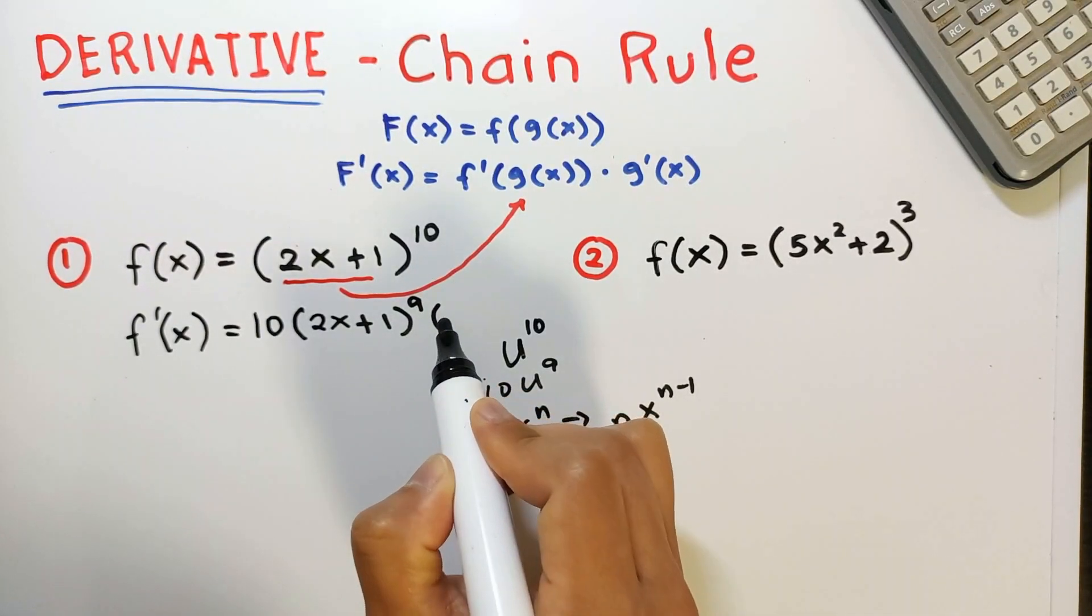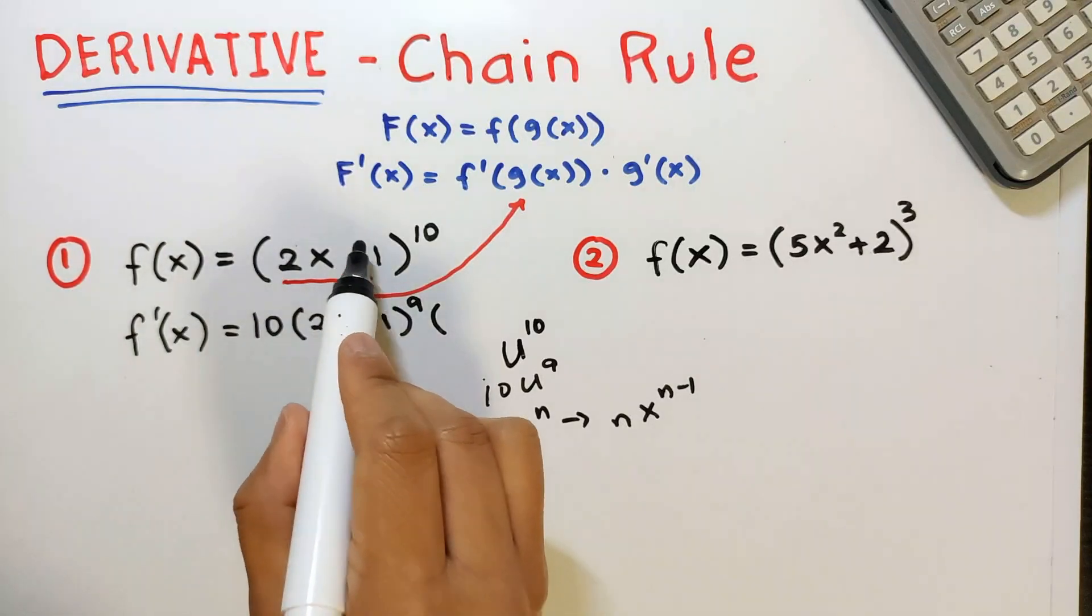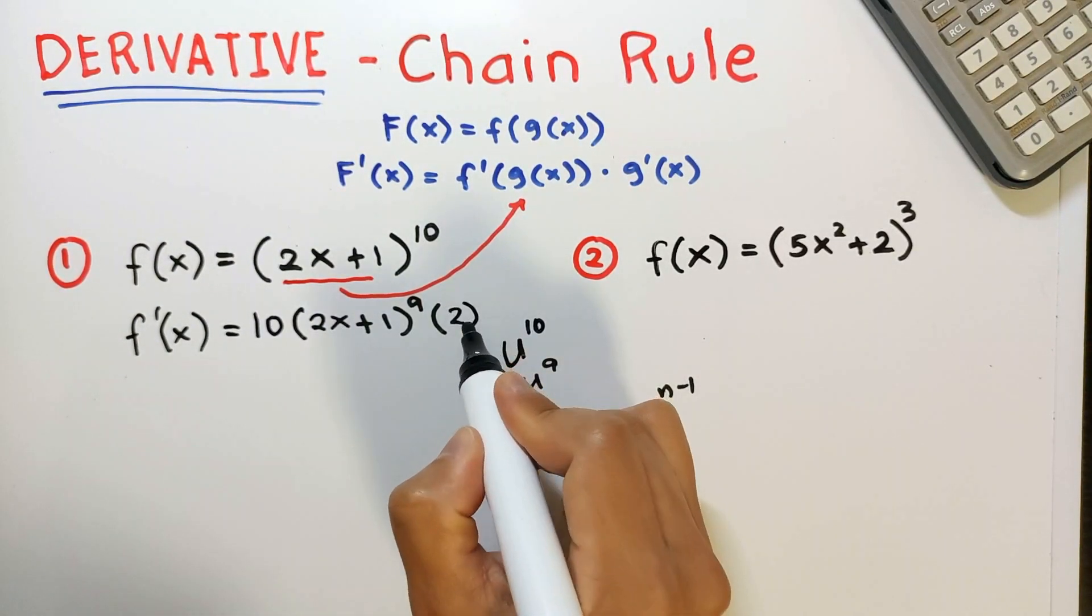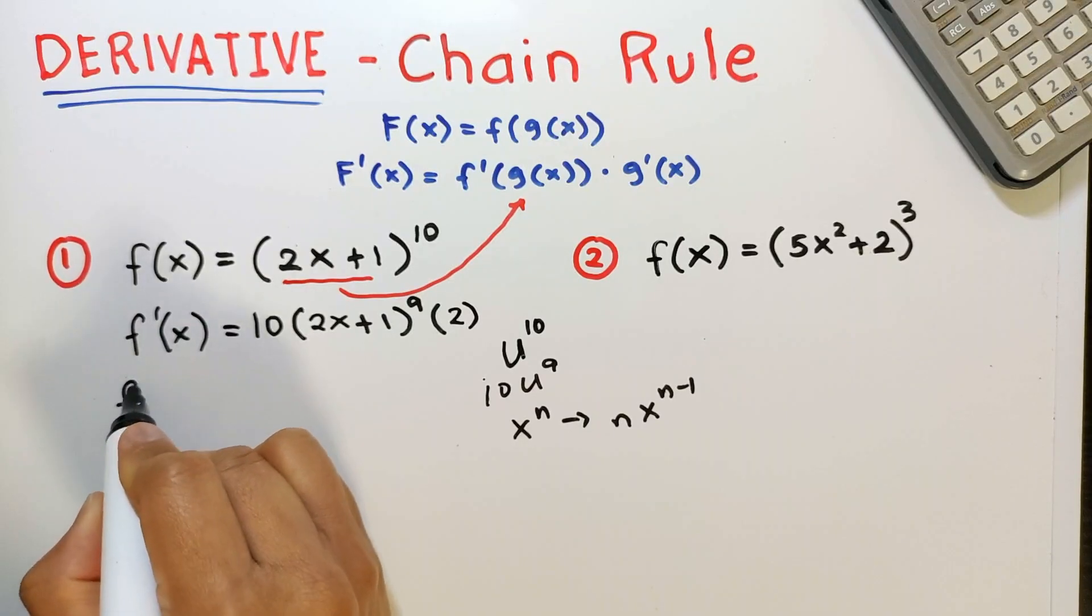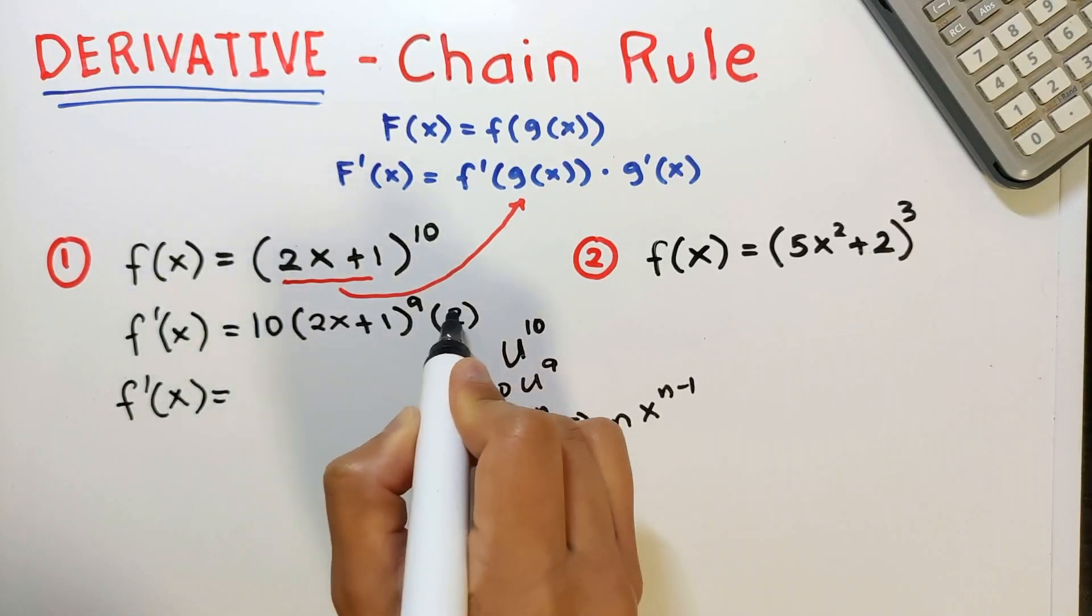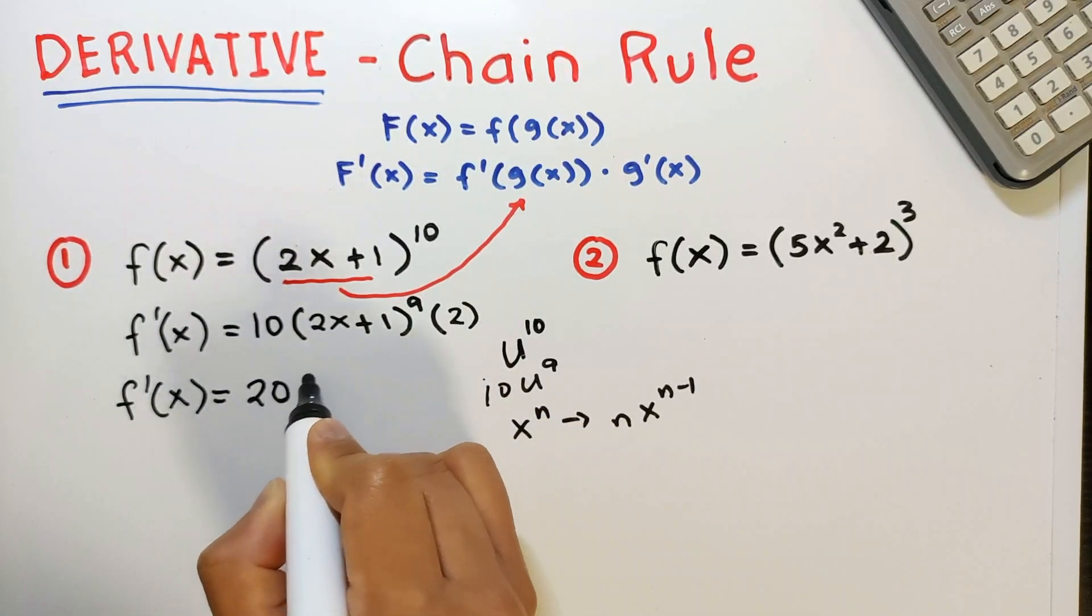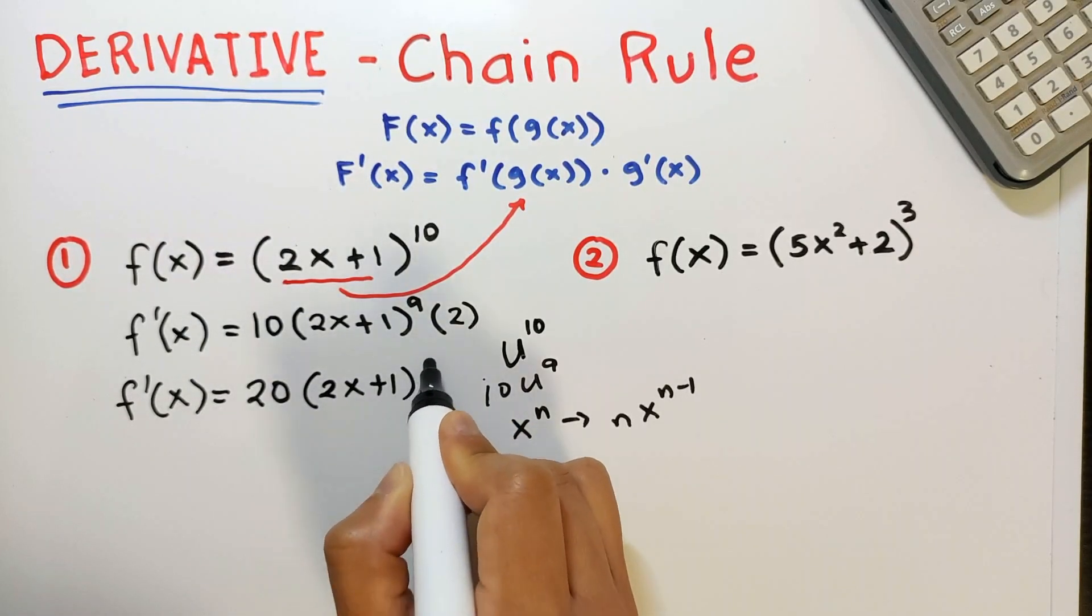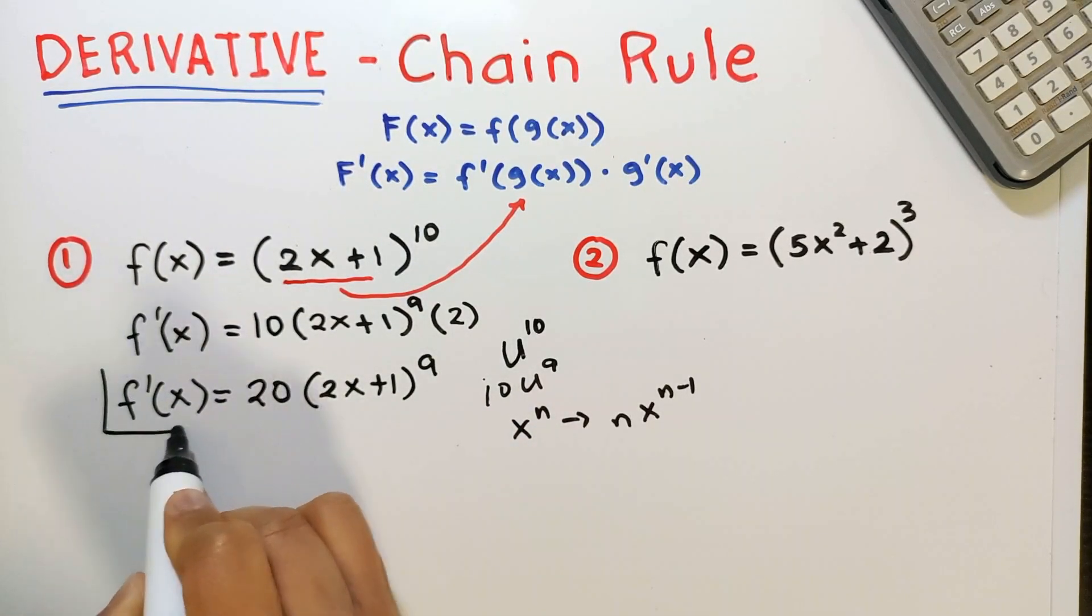And then multiply it by the derivative of the inner function g. So that's 2. And simplify. So now f prime of x is equal to 10 times 2 is 20, then copy 2x plus 1 raised to 9. So this is the final answer.